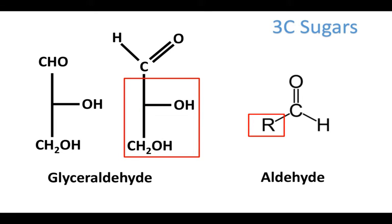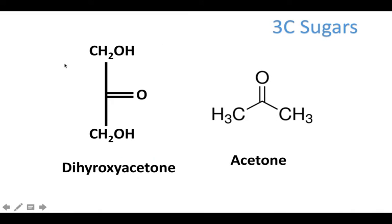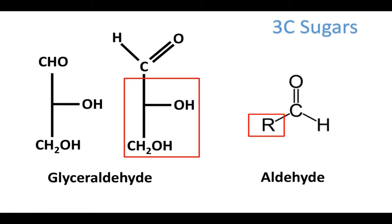Glyceraldehyde is the next 3-carbon sugar. I paired it up next to aldehyde — you've got your carbon double bonded to an oxygen and a hydrogen, then your R group. I boxed in the R group for glyceraldehyde so you can understand it better. I also drew out what CHO looks like, but from now on I'll just use CHO. So if you have CHO on top at the carbon 1 position, that's going to be an aldose sugar. You'll notice there's no double bond anywhere in the structure of glyceraldehyde, which helps explain why aldehyde is in the name.